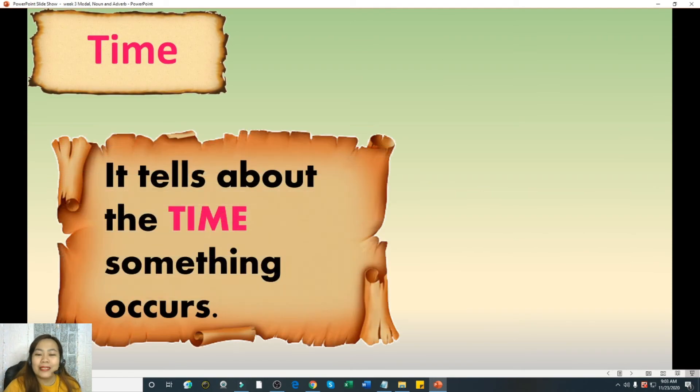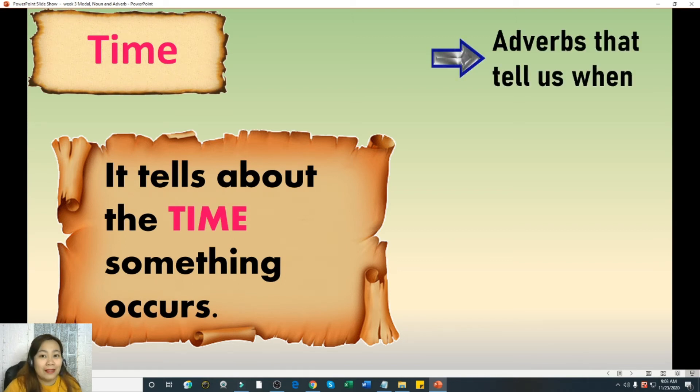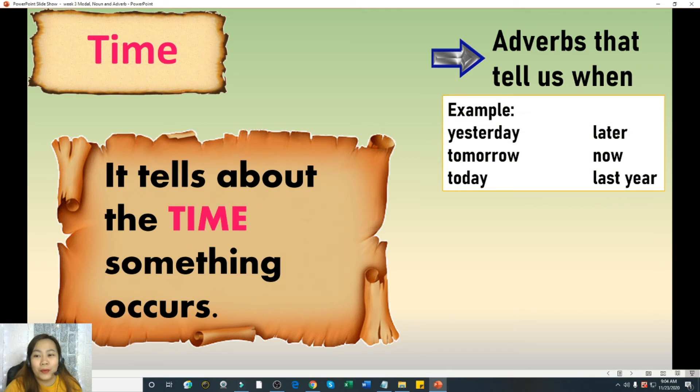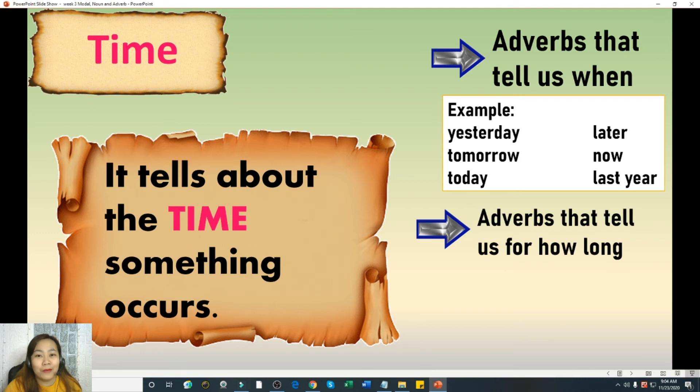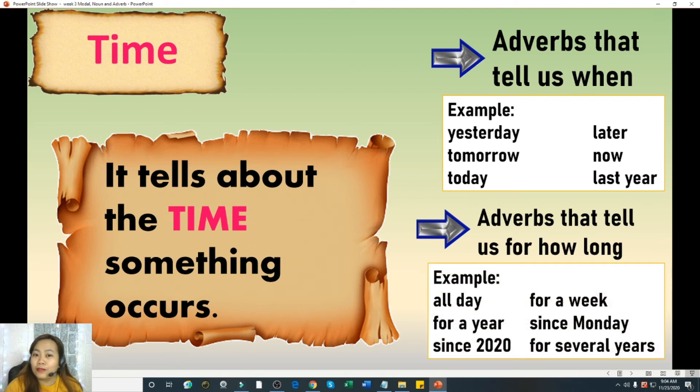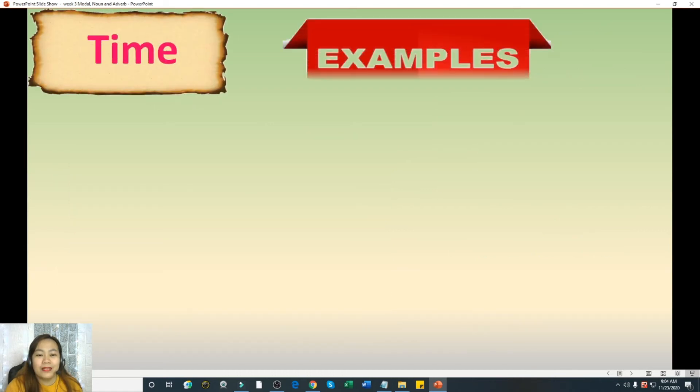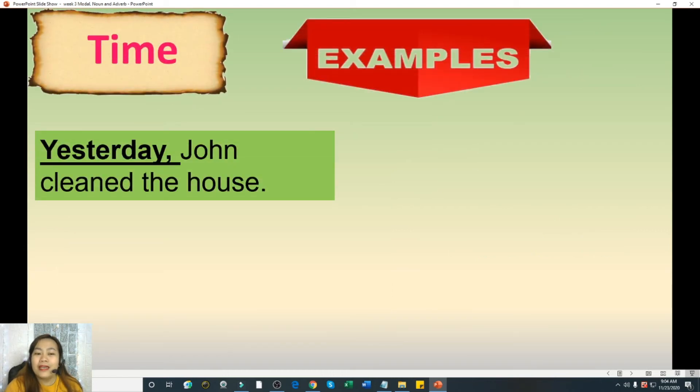The fourth one is the time adverb of time. Adverb of time tells about the time something occurs. Adverbs that tell us when. So it answers the question when. For example, yesterday, tomorrow, today, later, now, last year. And it also answers the question how long. For example, all day, for a year, since 2020, for a week, since Monday, for several years. So we have here some examples. Yesterday John cleaned the house. When did John clean the house? The answer is yesterday and it answers the question when.